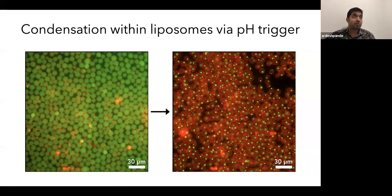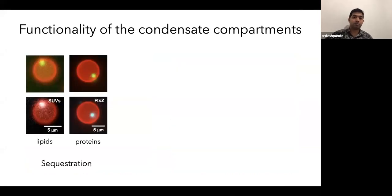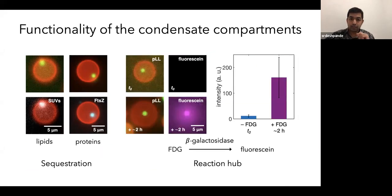So basically we can use two different strategies to form condensates inside liposomes. That's very nice, but what can you do with this? So I want to show you a few functionalities of such condensate compartments. So one thing that we did was to sequester different things. For example, lipids in the form of small unilamellar vesicles or proteins like FtsZ. And the idea here is by sequestering them, you make them unavailable for the rest of the cytoplasm, so as to say, or only available, make it available at a particular spot where the condensate is.